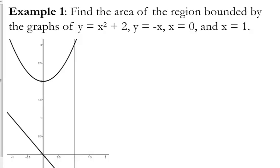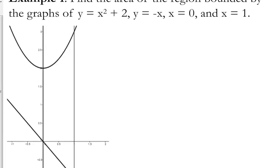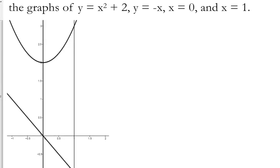We are going to find the area of the region bounded by the graphs of y equals x squared plus 2, y equals negative x, and x equals 0 and x equals 1. x equals 0 and x equals 1 are vertical lines that are just telling us where to cut off this region.